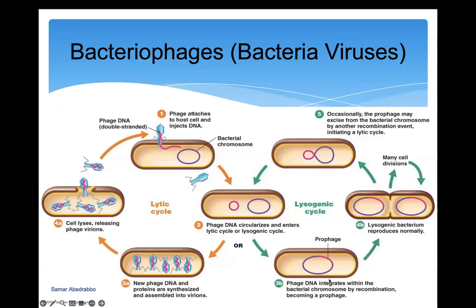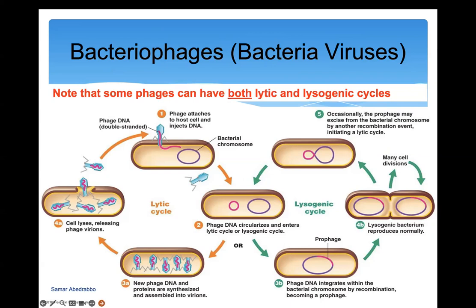To summarize bacteriophage cycles: in the lytic cycle, the phage attaches, injects its DNA, causes the bacterial cell to lyse and die. In the lysogenic cycle, the phage injects its DNA into the bacteria, it gets integrated as a prophage, and may later trigger the lytic cycle. Some phages can carry out both lytic and lysogenic cycles — we call those temperate phages.